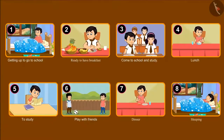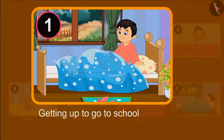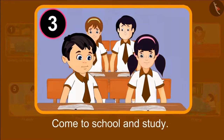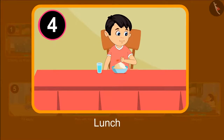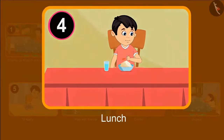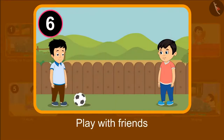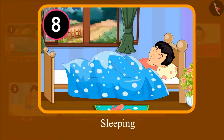Chotu got up early in the morning to go to school. Then he got ready and had breakfast. After that, he went to school and studied. Then he came back from school in the afternoon and had food. Then he studied again. After studying, he went to play with his friends. And then went to sleep after having dinner.